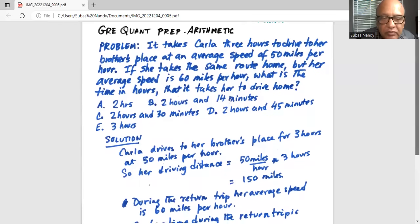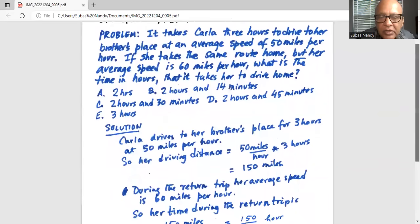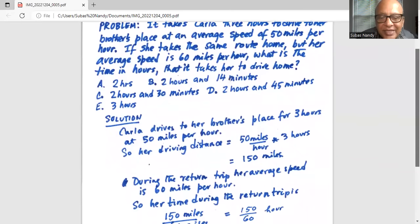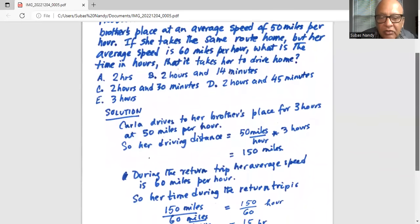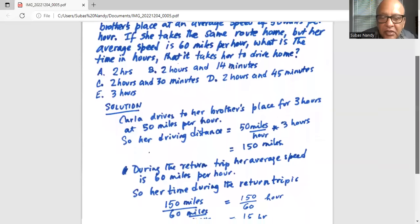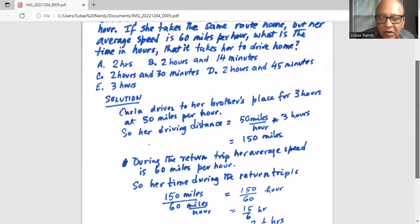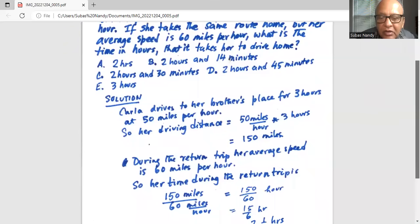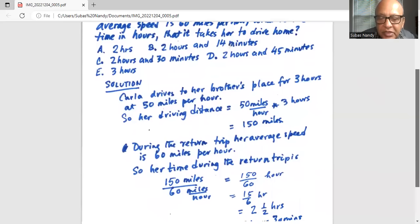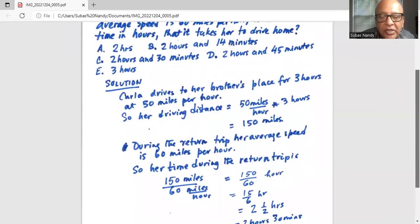Now during the return trip, our average speed is 60 miles per hour. So our time taken during the return trip will be 150 miles divided by 60 miles per hour, or equal to 150 over 60 hour, which is 15 over 6, or two and a half hours, two hours and 30 minutes.